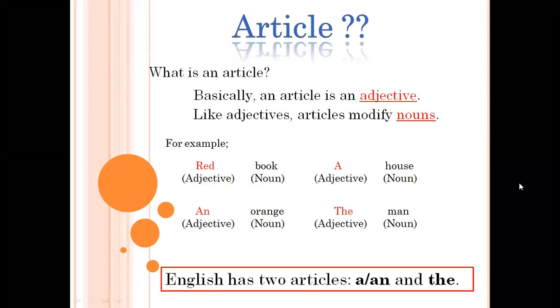What is an article? Basically, an article is an adjective. Like adjectives, articles modify nouns. Means they add into the meaning of noun. For example, red book, a house, an orange, the man. English has two articles. A, an, and the.